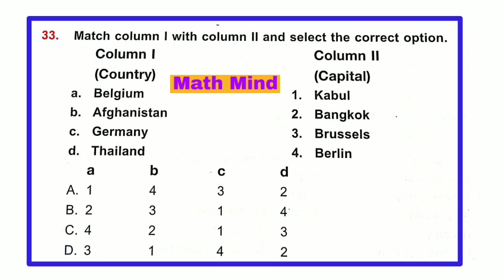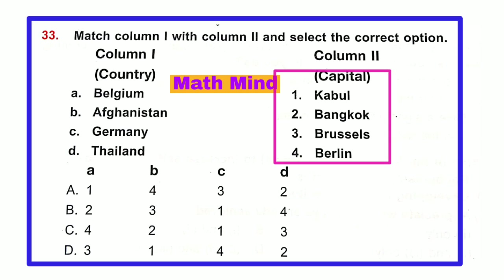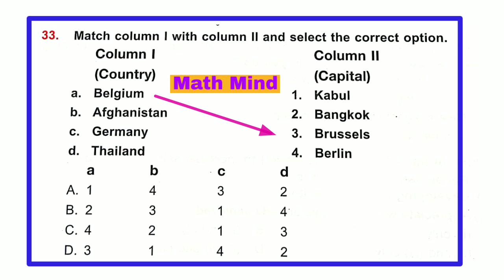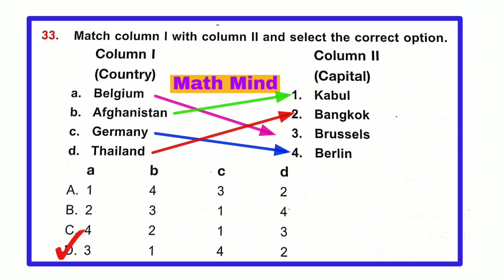Question number 33: Match column 1 (countries) with column 2 (their capitals) and select the correct option. Capital of Belgium — Brussels. Capital of Afghanistan — Kabul. Capital of Germany — Berlin. Capital of Thailand — Bangkok. So option D is correct.